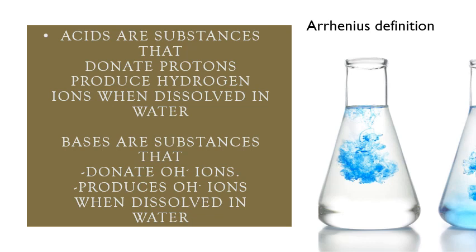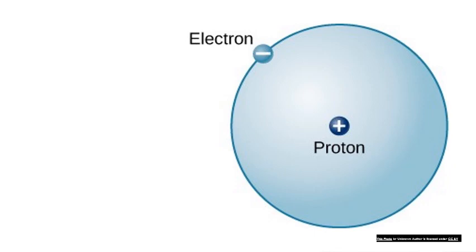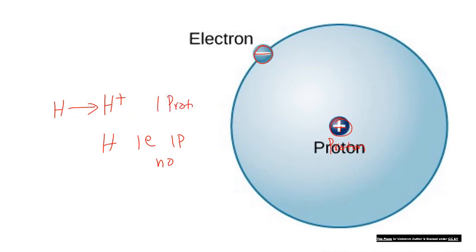The Arrhenius definition states that an acid is any substance that can donate a proton, or it produces hydrogen ions (H+) when dissolved in water. Bases are substances that donate a hydroxide ion, or produce hydroxide ions (OH-) when dissolved in water. H+ is called a proton because hydrogen has one electron and one proton and no neutron. When hydrogen loses its electron, it becomes H+, which has only one proton — that is why it is called a proton donor.